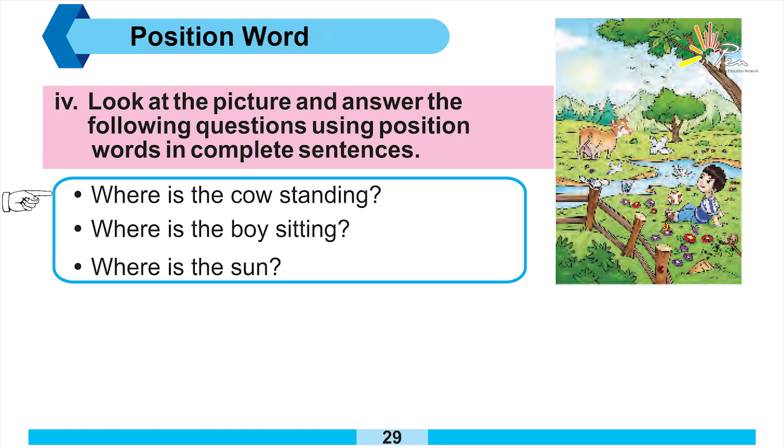So question number one is where is the cow standing? If you look at this picture, the cow is standing in the field. So we can say the cow is standing in the field. So 'in' is a position word.